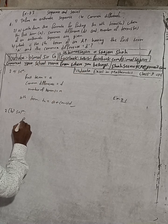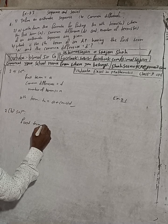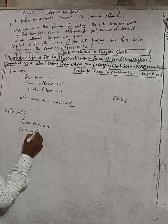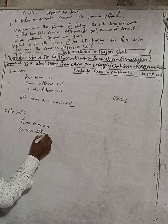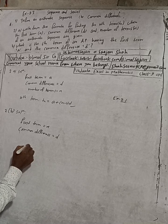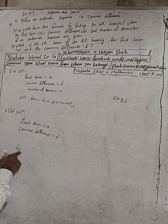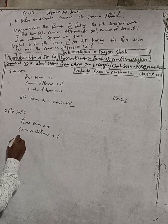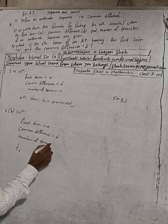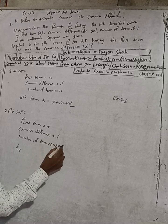So first term is given here a, and common difference is given d. And what is the sixth term? So we have to find sixth term t6. t6 means the number of terms total is six, so number of terms n is equal to six.